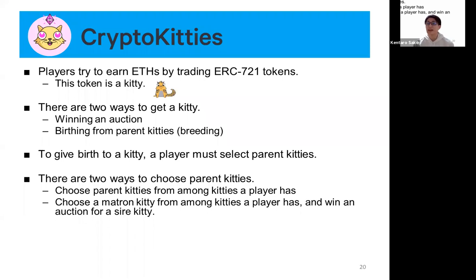There are two ways to get a kitty: winning an auction or breeding from parent kitties. To give birth to a kitty, a player must set up parent kitties. There are two ways to choose parent kitties. A player chooses both parent kitties from those they already own, or they rent a sire kitty through an auction.